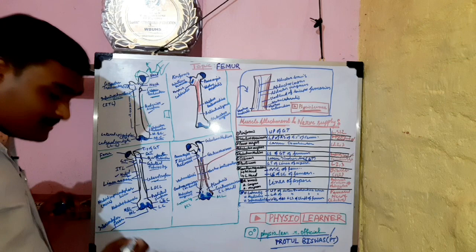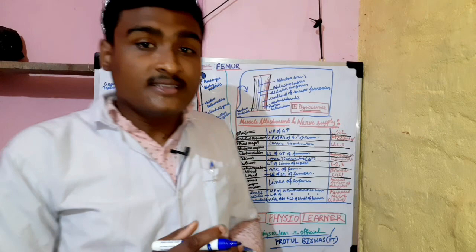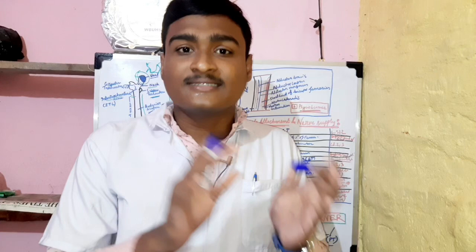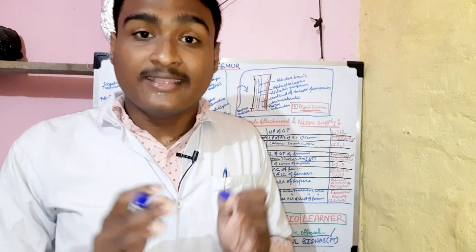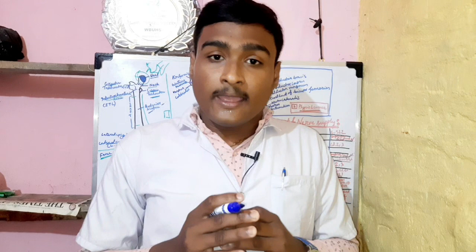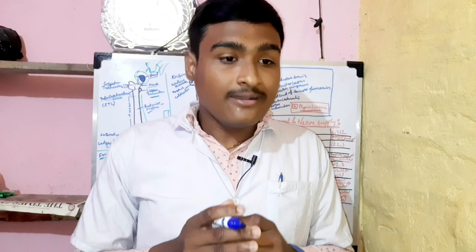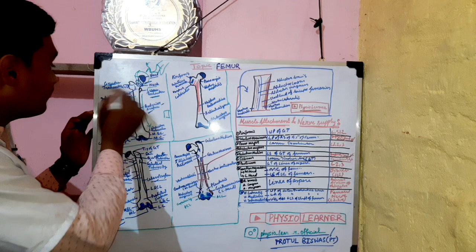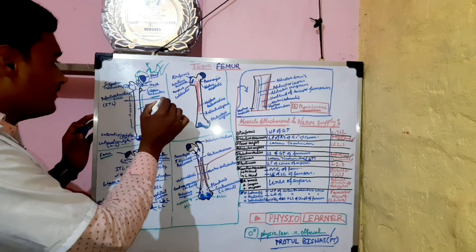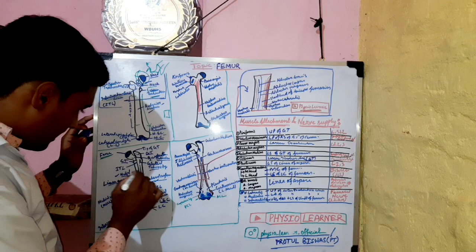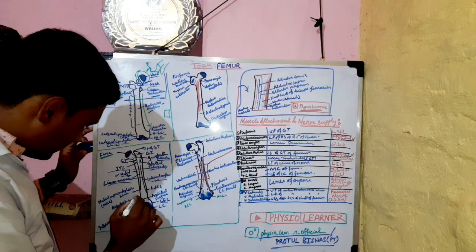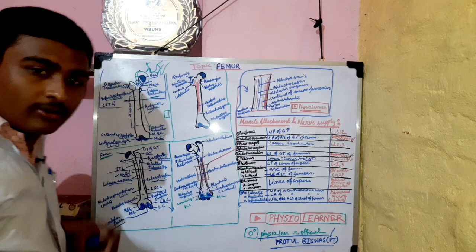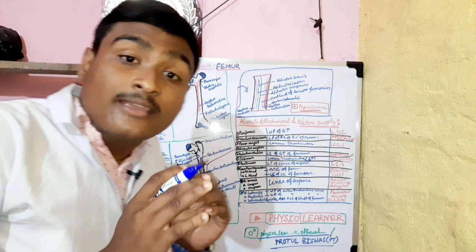The femur is mainly divided into three parts: the upper end, shaft, and lower end. The upper end includes the head of the femur and the neck of the femur. The greater trochanter and lesser trochanter are part of the upper end. This is the upper end of the femur, and below that portion is the lower end.